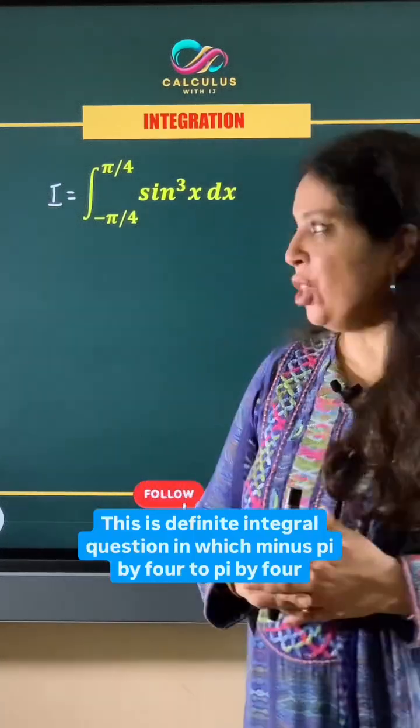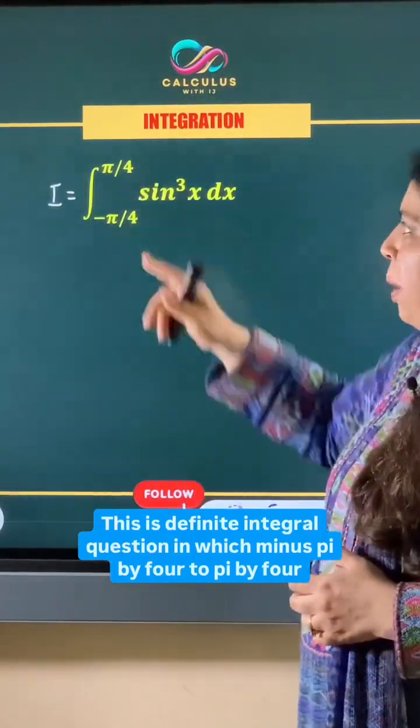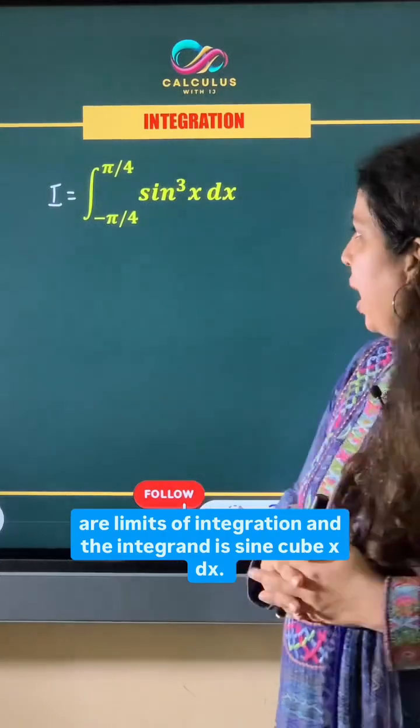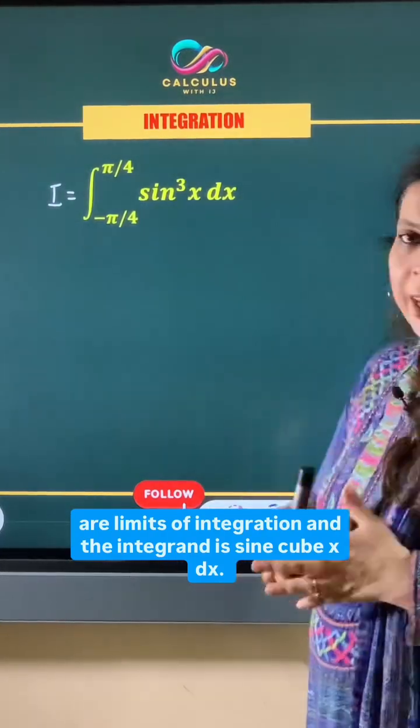This is a definite integral question in which minus pi by 4 to pi by 4 are limits of integration and the integrand is sine cube x dx.